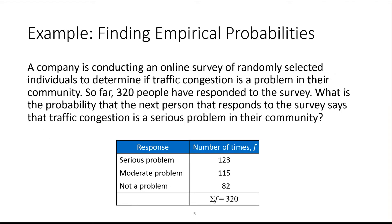For another example: a company is conducting an online survey of randomly selected individuals to determine if traffic congestion is a problem in their area. So far 320 people have responded. What is the probability that the next person who responds says traffic congestion is a serious problem? Looking at the chart, we have 123 people who said it was serious out of the 320 surveyed, so the probability would be 123 divided by 320.